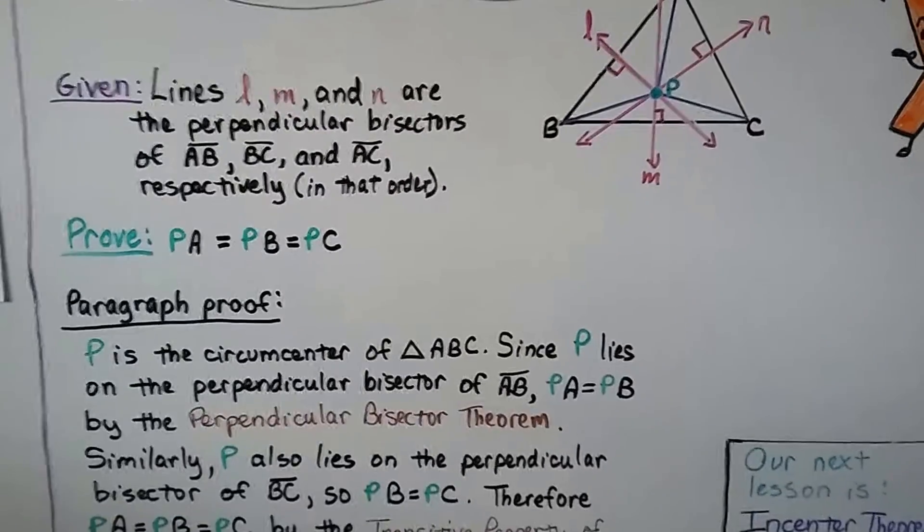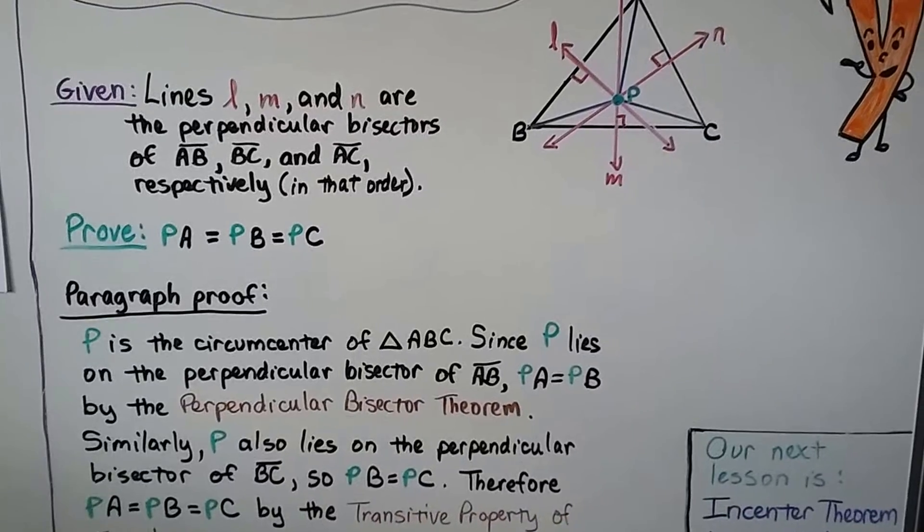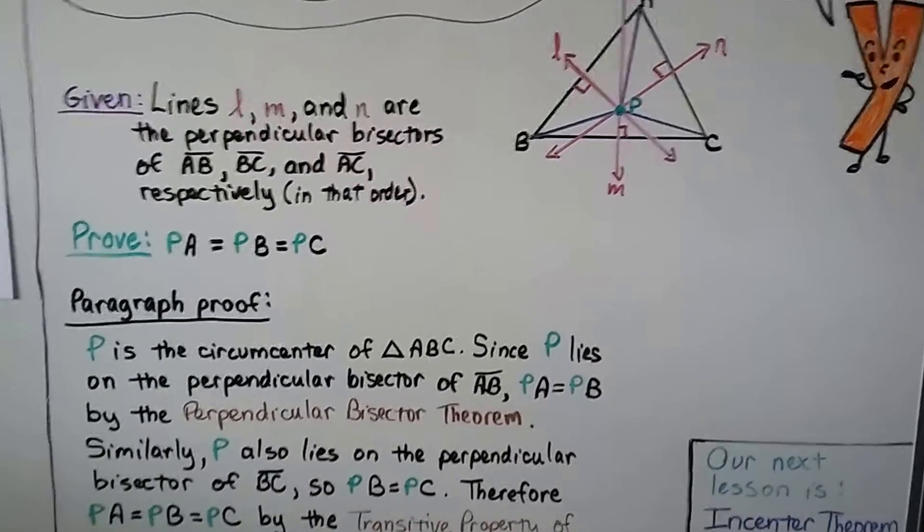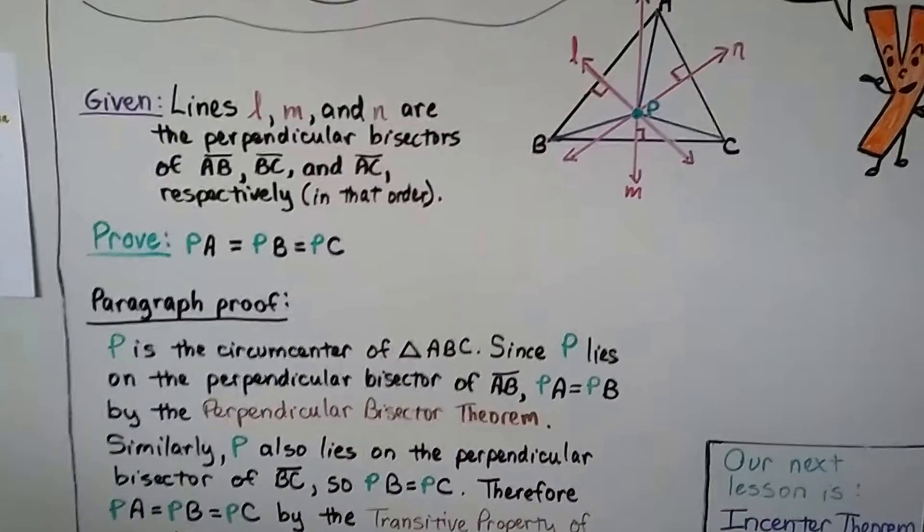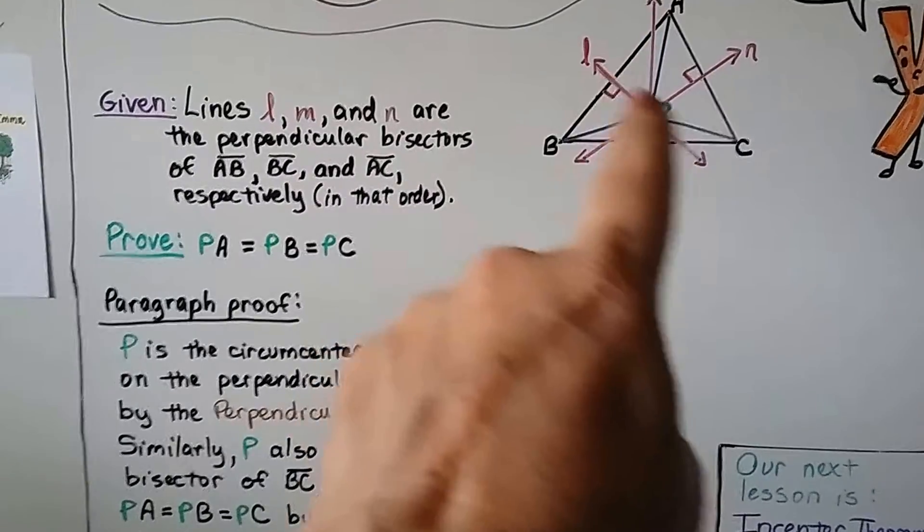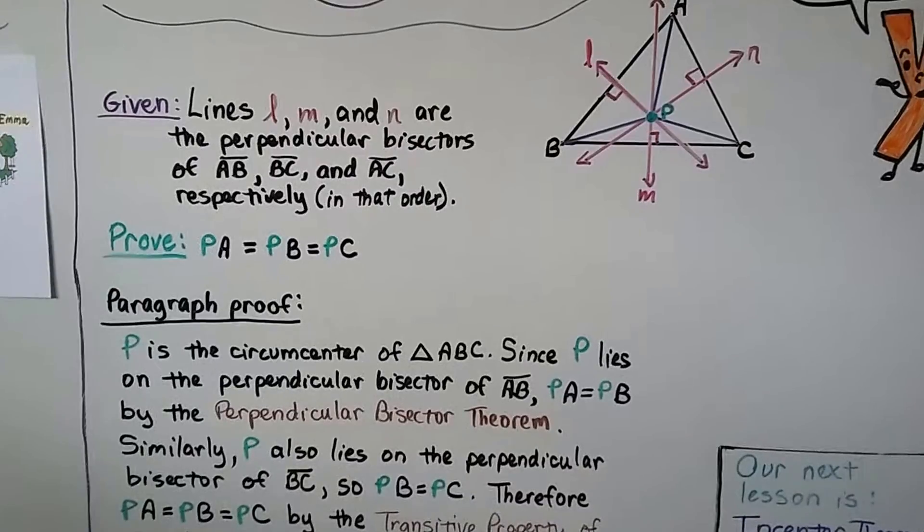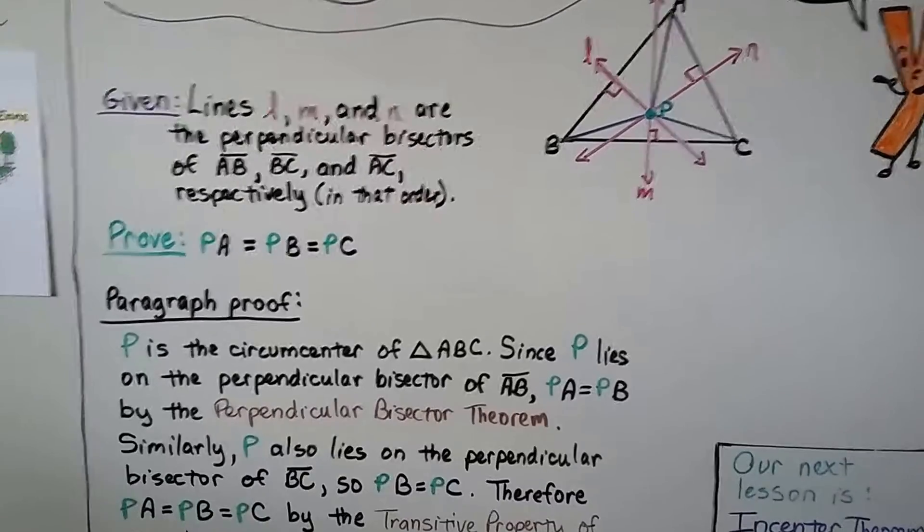We have a paragraph proof. P is the circumcenter of triangle ABC, and since P lies on the perpendicular bisector of AB, PA equals PB. It lies on the bisector. That's by the perpendicular bisector theorem.